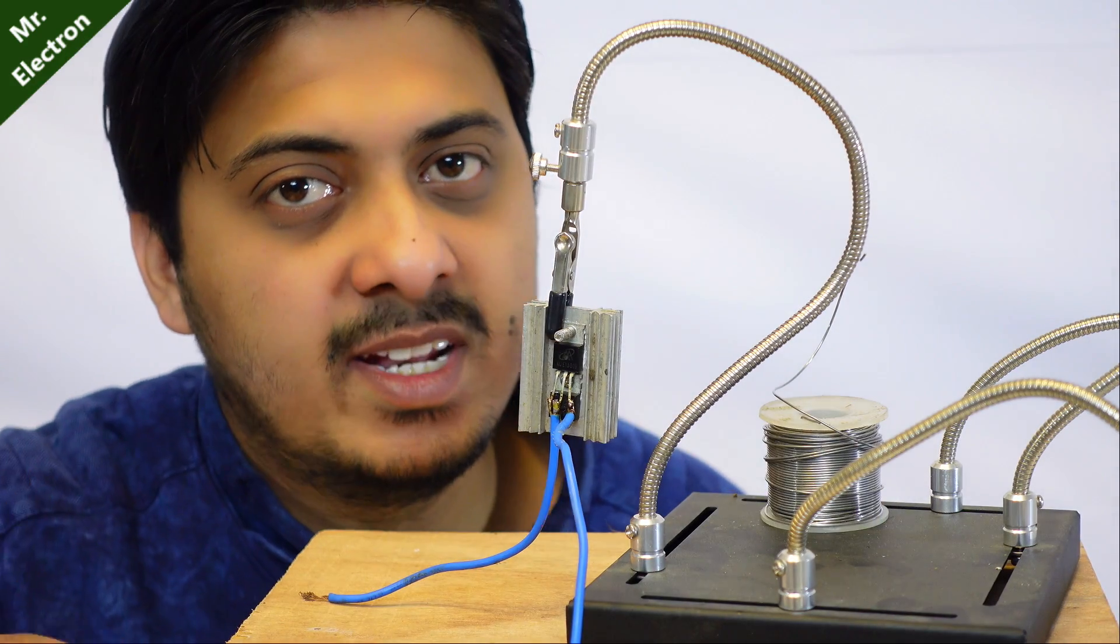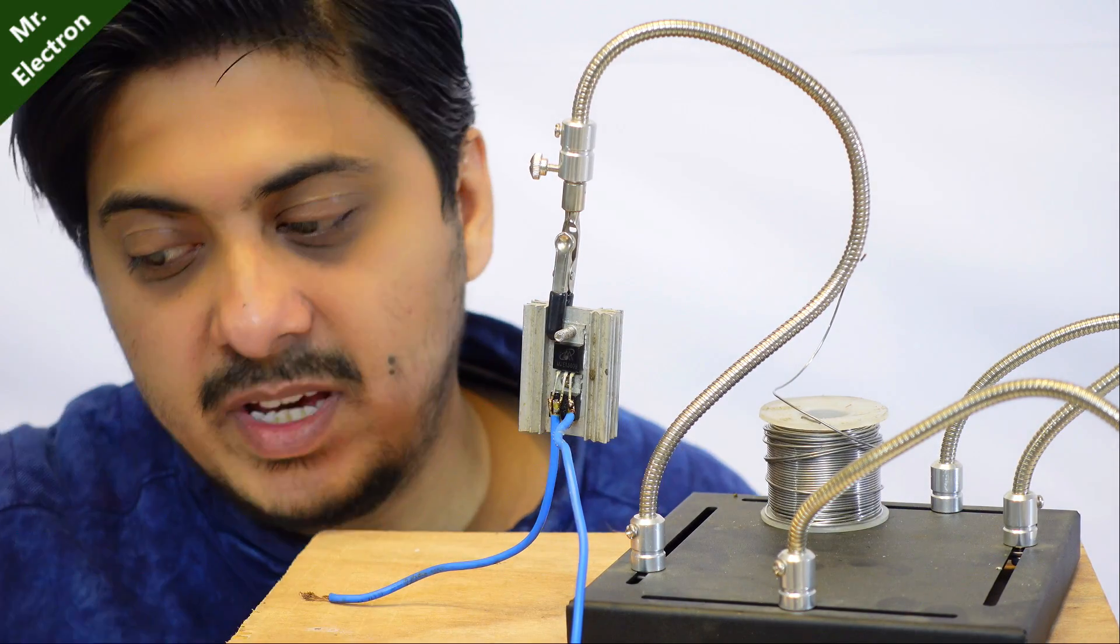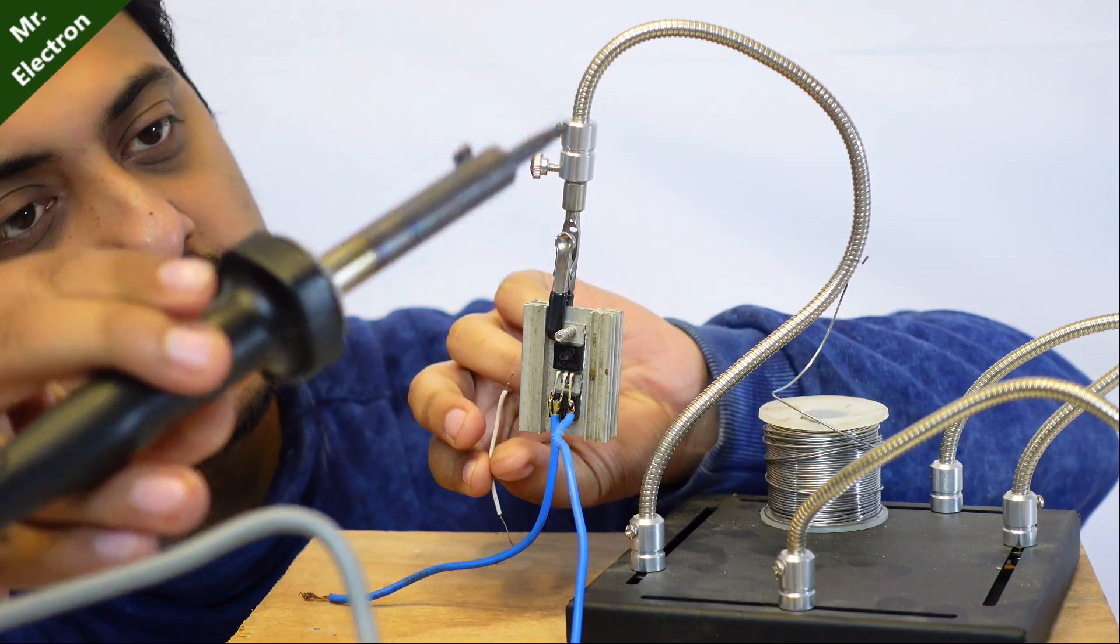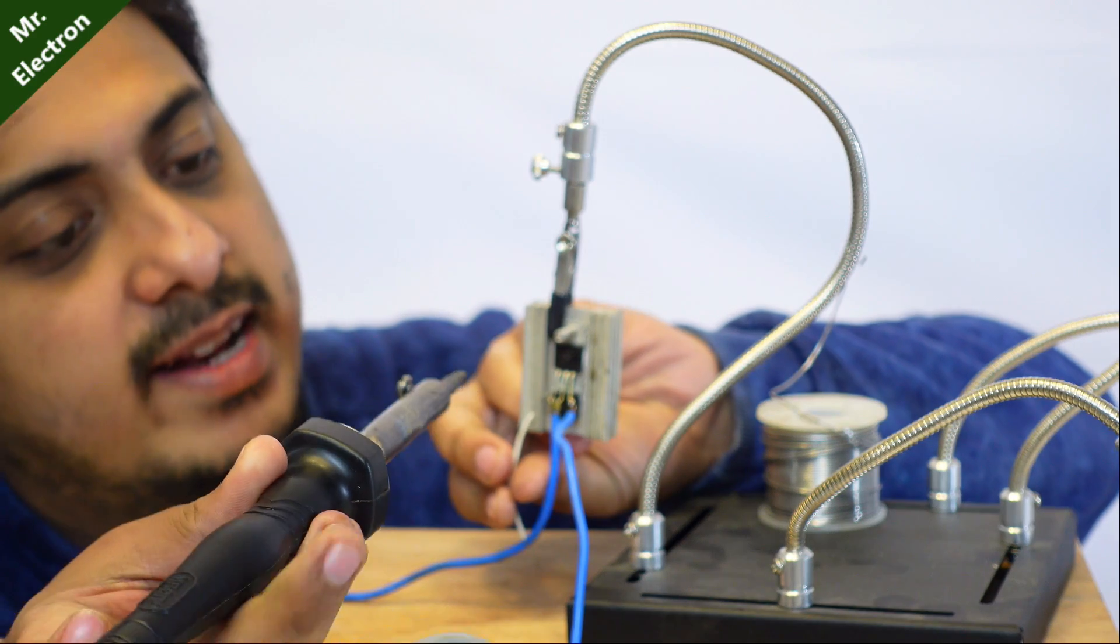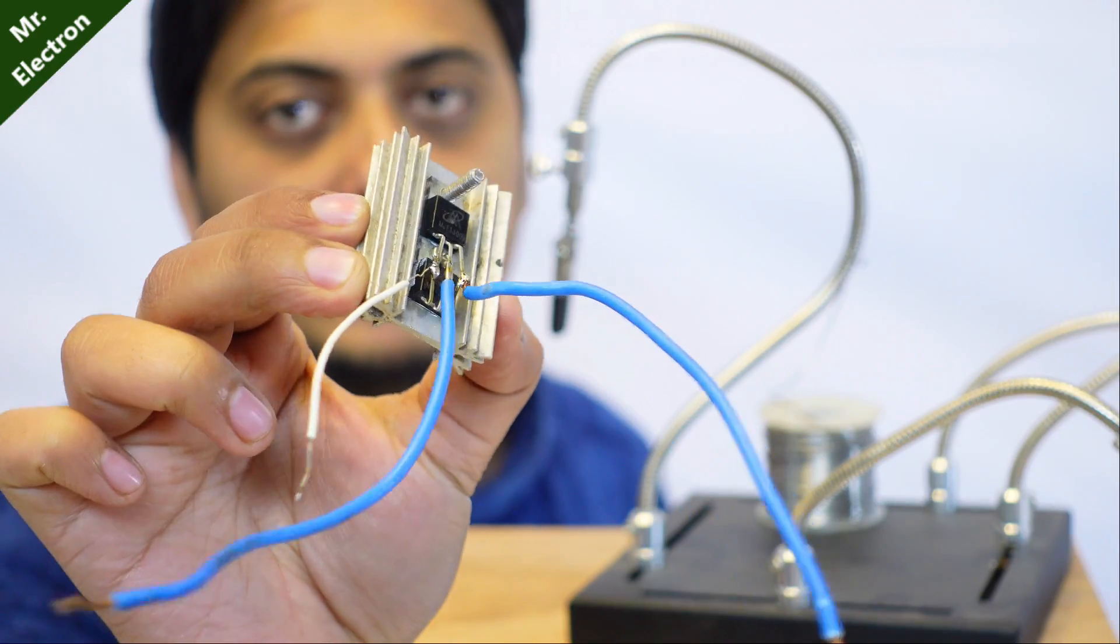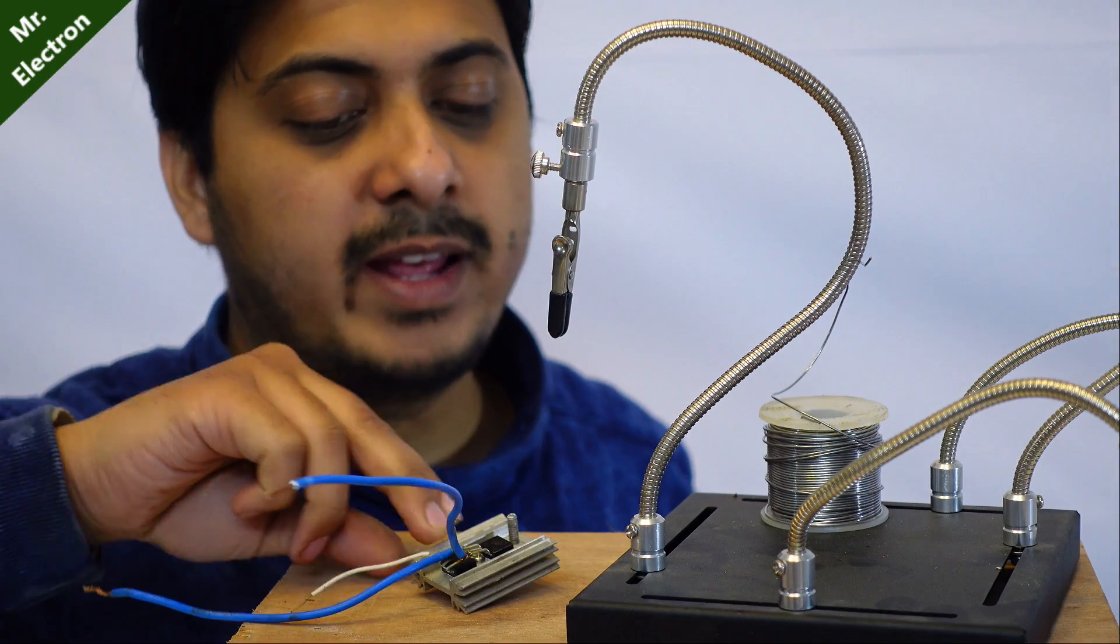Now only one terminal is left, which is the common base. This is the base wire that I'm going to connect. It is thin because the base current is comparatively lesser. This is how you are going to do it. Now let's connect it to the driver circuit and transformer and see how much load we can operate with it.